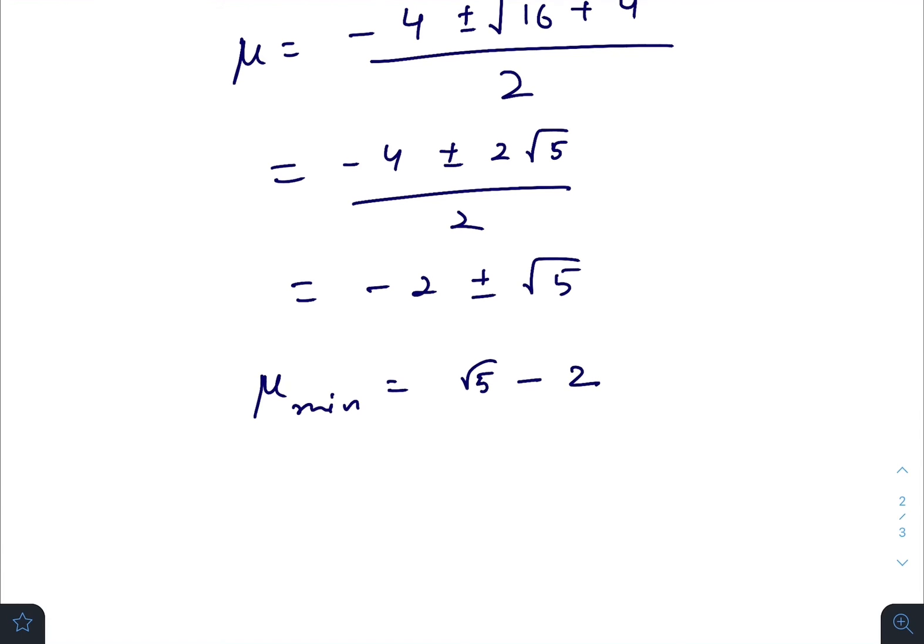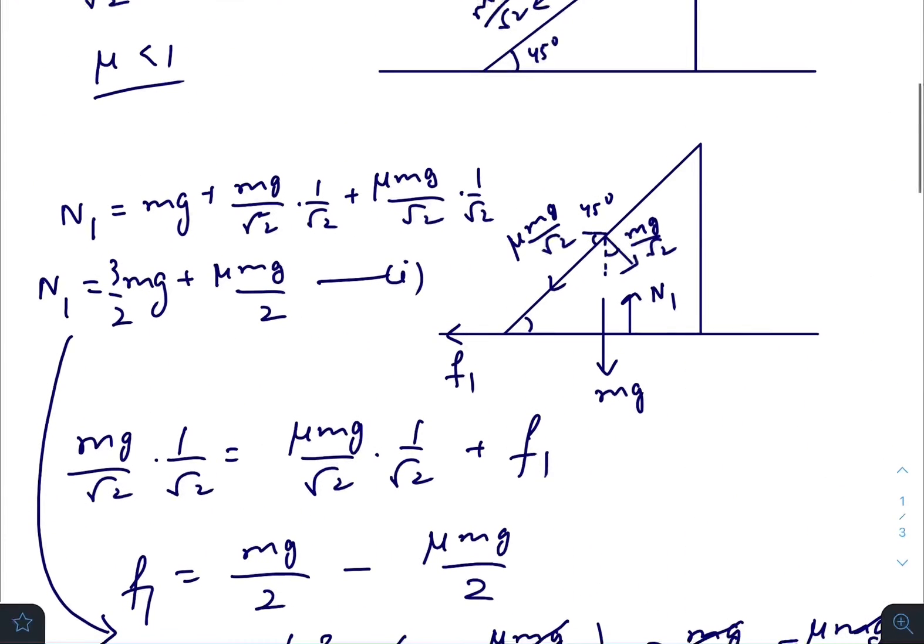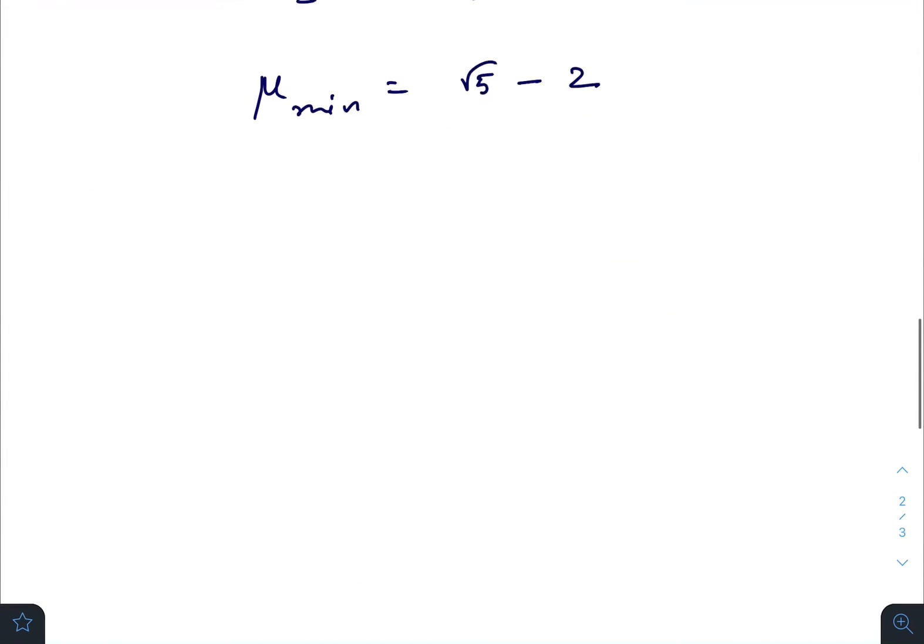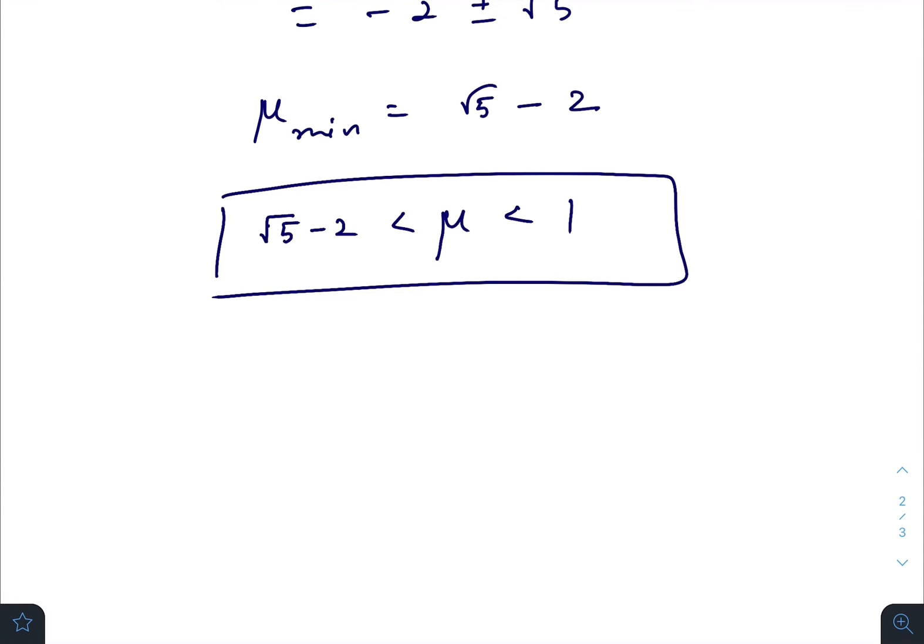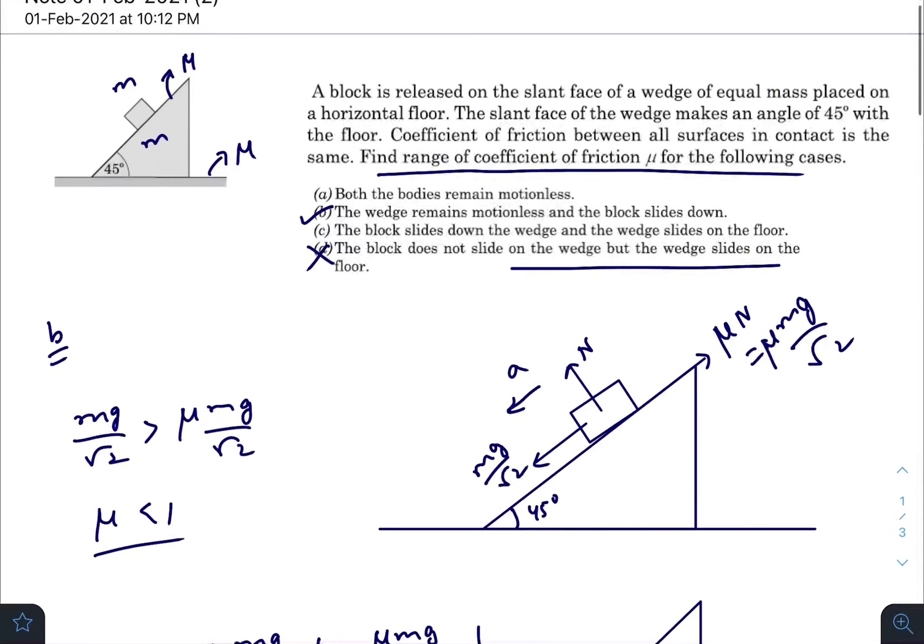For the block to slide down and the inclined plane to remain at rest, the range of μ must lie between √5 - 2 and 1. If the value of μ is greater than 1, then the whole system will remain in equilibrium. If the value of μ is less than √5 - 2, then the inclined plane will slide over the horizontal surface and the block will also slide down the inclined plane. By solving question B, we generally get answers for A and C also.